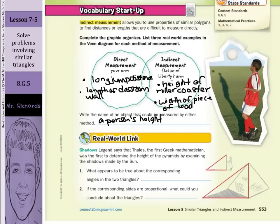Now, in our real-world link, legend says that Thales, the first Greek mathematician, was the first to determine the height of the pyramids by examining the shadows made by the sun. What appears to be true about the corresponding angles in the two triangles? They look equal.